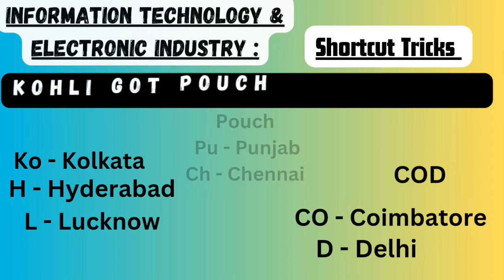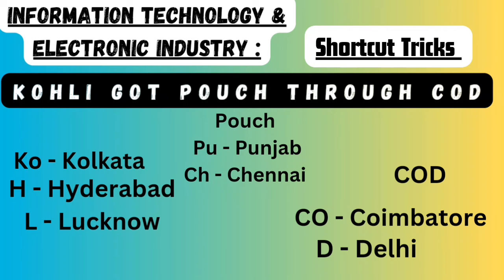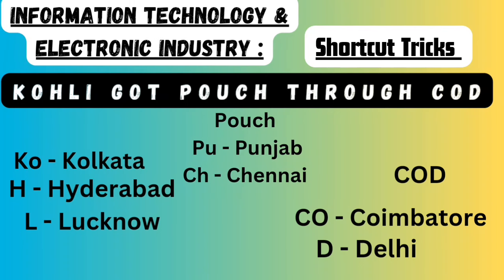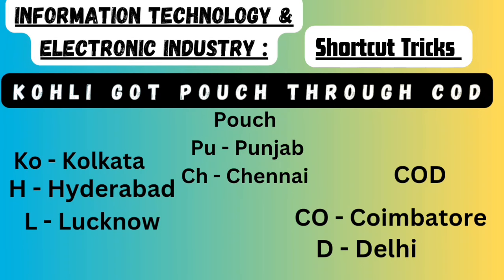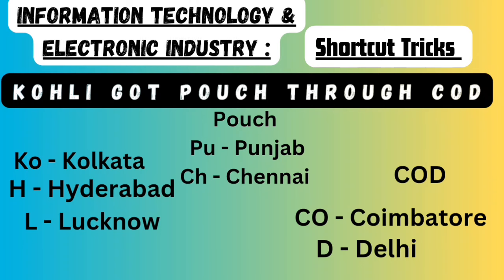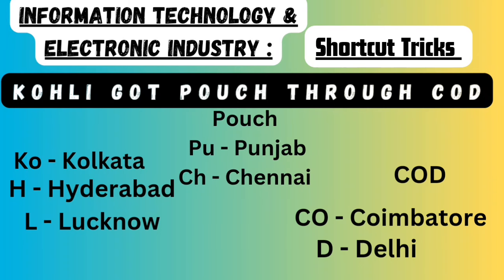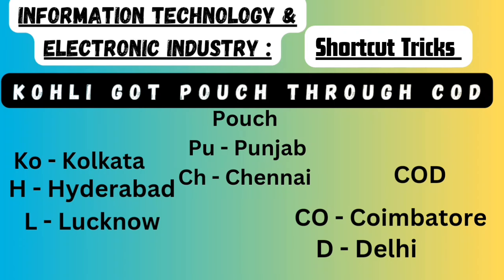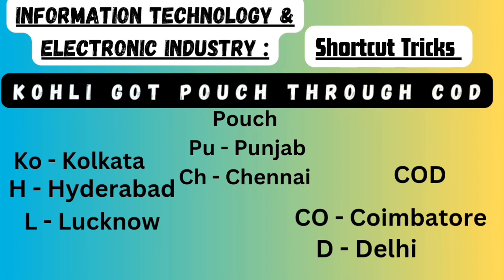For the important centers, remember this sentence: 'Kohli got pouch through COD — cash on delivery.' In the word Kohli: K-O represents Kolkata, H represents Hyderabad, and L represents Lucknow. In the word Pouch: P-U stands for Punjab, and C-H stands for Chennai. In COD: C-O represents Coimbatore, and D represents Delhi. These are the important centers of electronic goods.